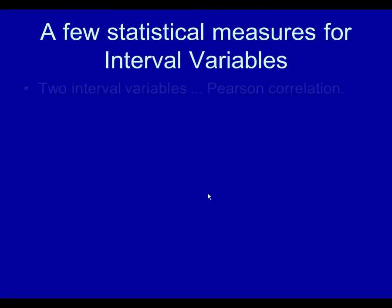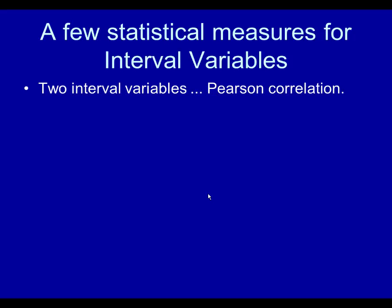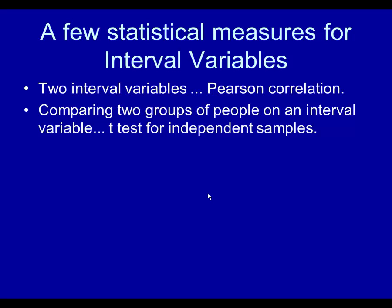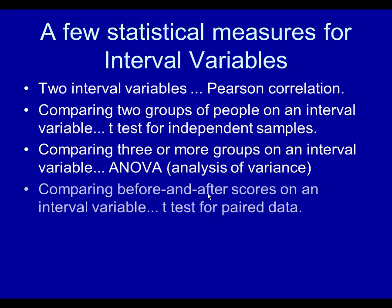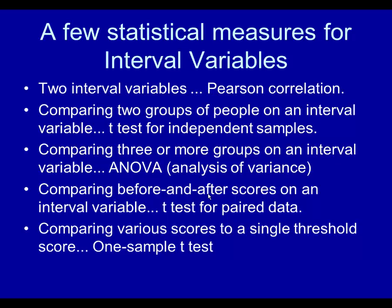Here are a few statistical measures for interval variables. If you have two interval variables, the Pearson correlation would be appropriate. If you're comparing two groups of people on an interval variable, the t-test for independent samples would be appropriate. If you're comparing three or more groups on an interval variable, analysis of variance would be appropriate — we're not going to be talking about that in this presentation. If you're comparing before and after scores on an interval variable, the t-test for paired data would be appropriate. Or if you're comparing various scores to a single threshold score, the one-sample t-test would be appropriate.